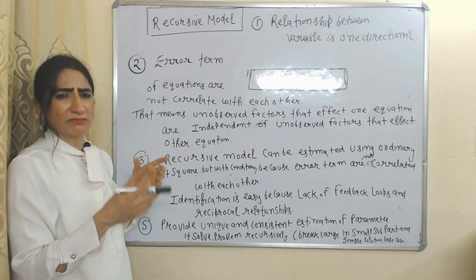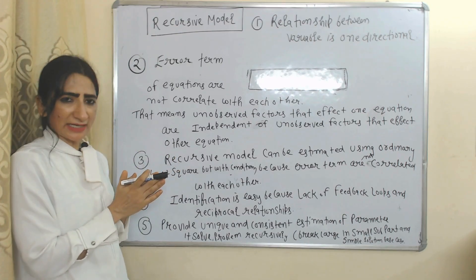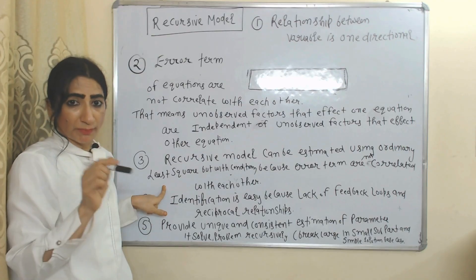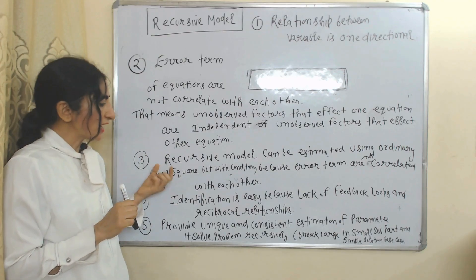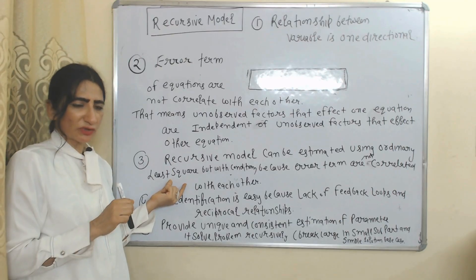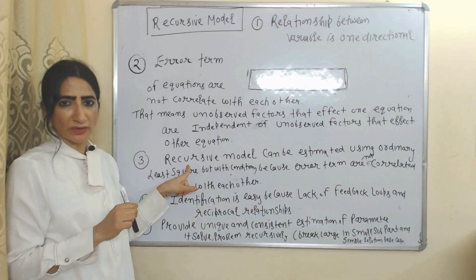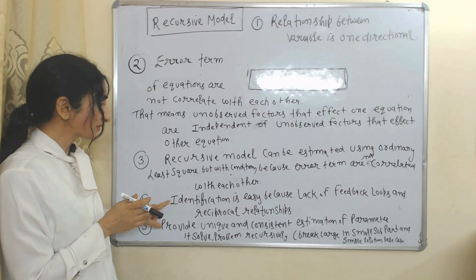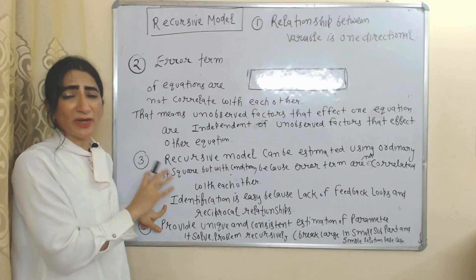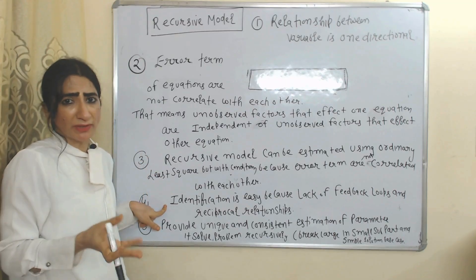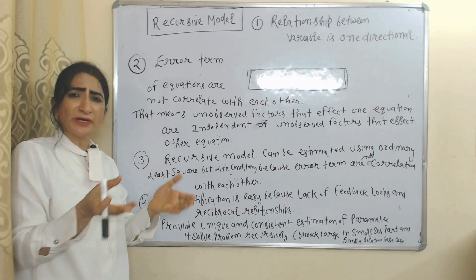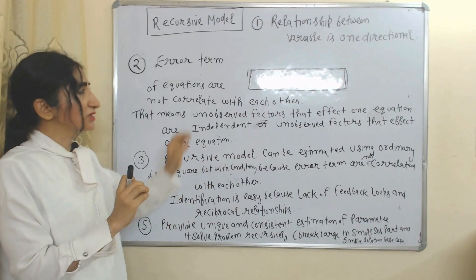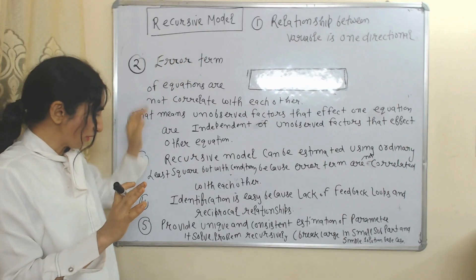A recursive model can be estimated using the Ordinary Least Squares method with some conditions. We can use OLS here because the error terms are not correlated with each other. Identification is very easy in the case of a recursive model because there is no feedback loop and no reciprocal influence.